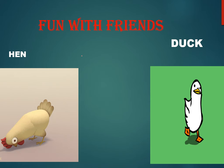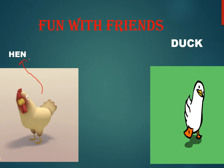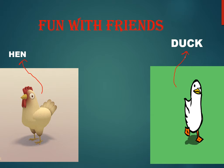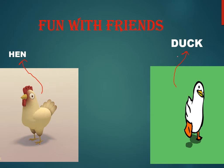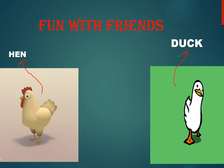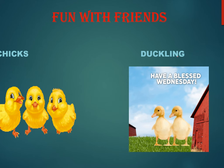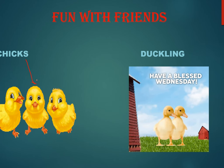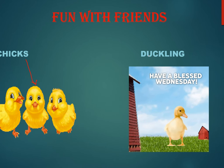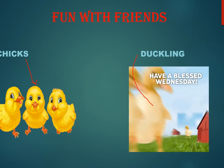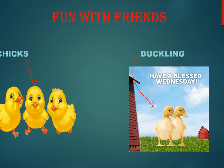Here you can see a Hen and this is a Duck. Now tell me, what is the hen's baby called? It is Chicks — the hen's baby is called Chicks. And what is the baby of duck called? Ducklings. Here you can see these are Ducklings. Now let's start the chapter.